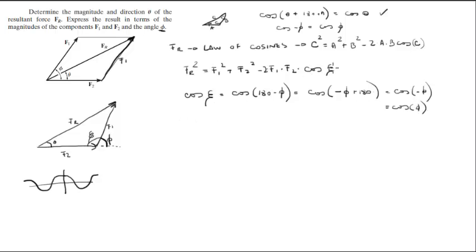So you can simply replace that by a phi and you will get FR is equal to F1 squared plus F2 squared minus 2 times F1 times F2 times the cosine of phi, and we had a square over here, we're going to square root it over here. And we got FR in terms of F1, F2 and phi.